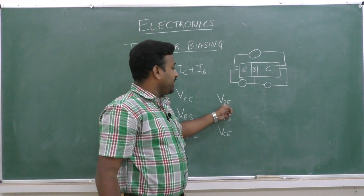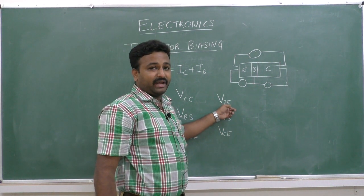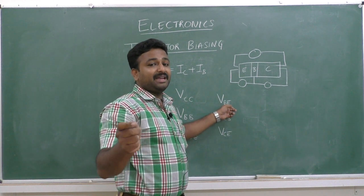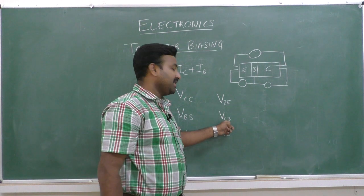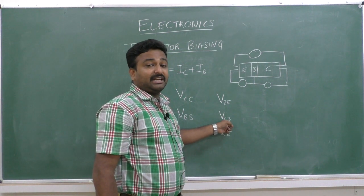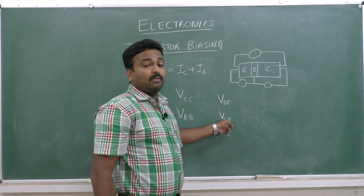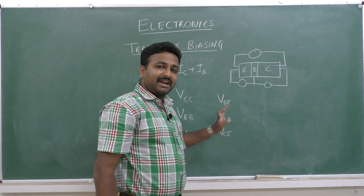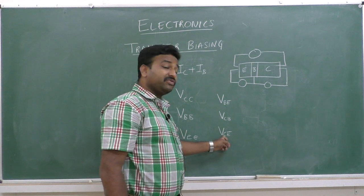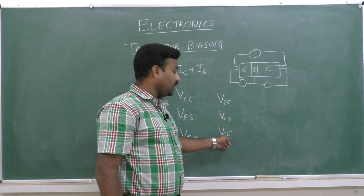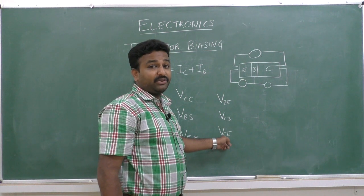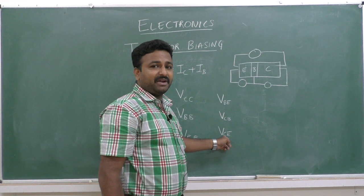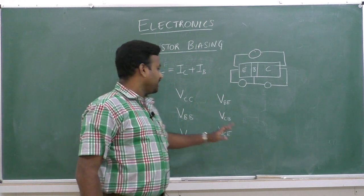To summarize the voltage notations: VBE is the base-to-emitter voltage, that is the potential difference measured between the base and emitter regions of the transistor. VCB is the collector-to-base voltage, that is the potential difference measured across the collector-base junction. VCE is the collector-to-emitter voltage, that is the potential difference measured between the collector and emitter regions.